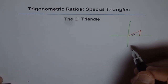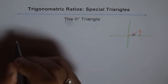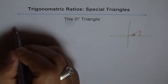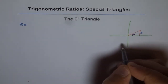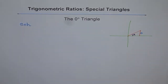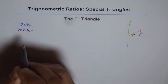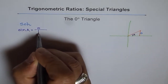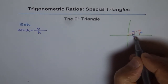So for that we know SOH-CAH-TOA, which helps us figure out sine, cosine and tangent. Sine is SOH: sine of angle A equals opposite over hypotenuse. So opposite over hypotenuse — that's my opposite side, that's my hypotenuse, and this is my adjacent side.